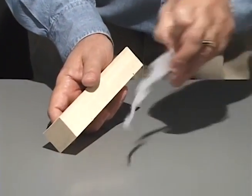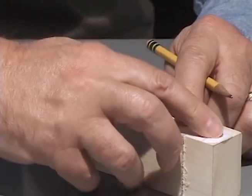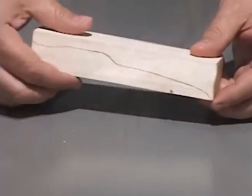Take the template and place it on the side of the block, lining up the axle slots. Trace the car template on the block. If you're using the racer shaping tools or carpenter's handsaw, you will have to trace on both sides of the block for an even cut.